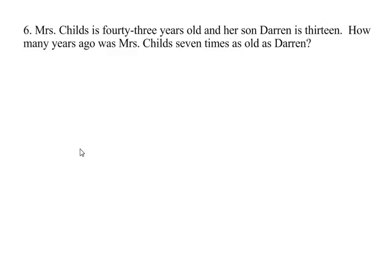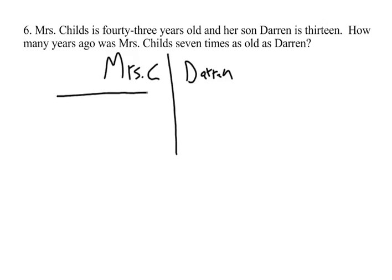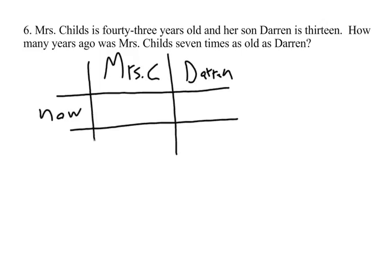Alright, so let's build our expressions here and talk about who we've got. We've got Mrs. Childs and we've got Darren — those are the two people involved. We know something about how they relate to each other right now, and we need to find how many years ago — that's an amount we don't know. So let's call that X years, because that's our unknown.